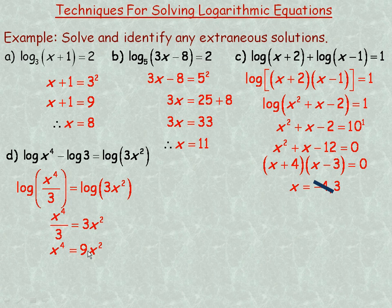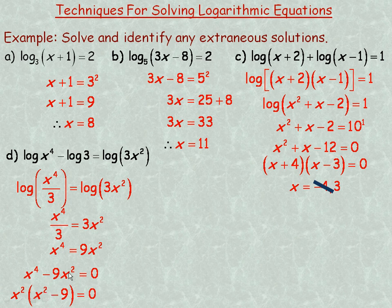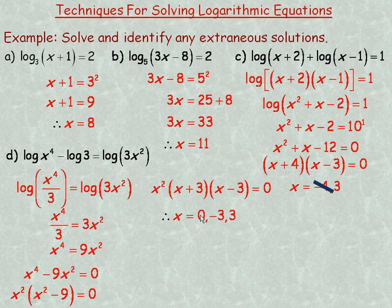Subtracting 9x squared from both sides and setting equal to zero: x to the fourth minus 9x squared equals 0. The common factor is x squared, so I factor that out: x squared times (x squared minus 9) equals 0. Since x squared minus 9 is a difference of two perfect squares, it factors into x plus 3 and x minus 3. So the three solutions are x equals 0, x equals negative 3, and x equals 3.